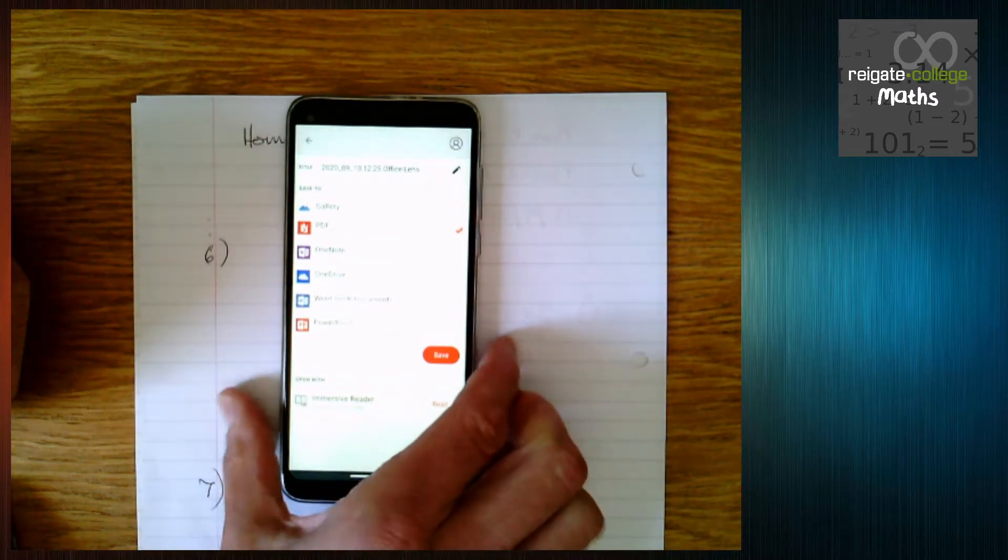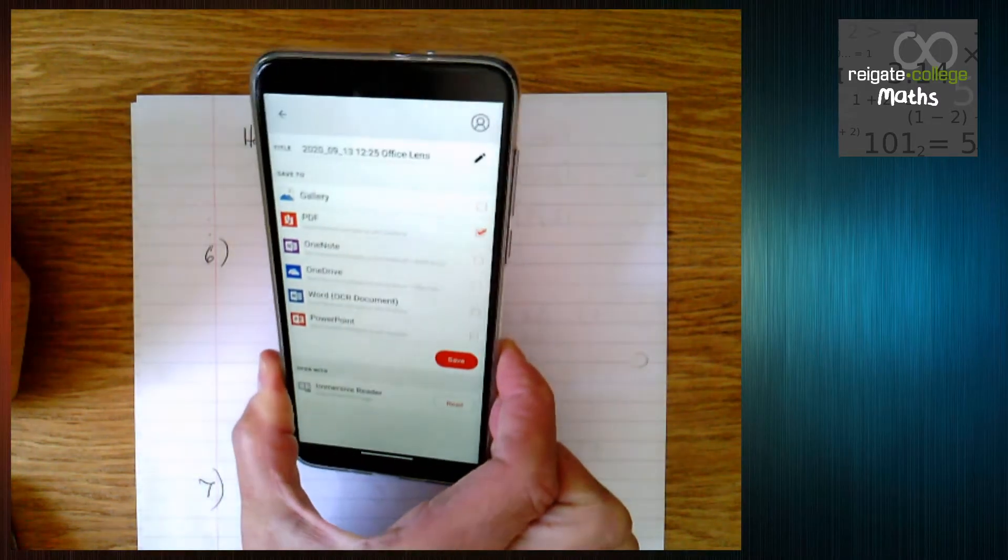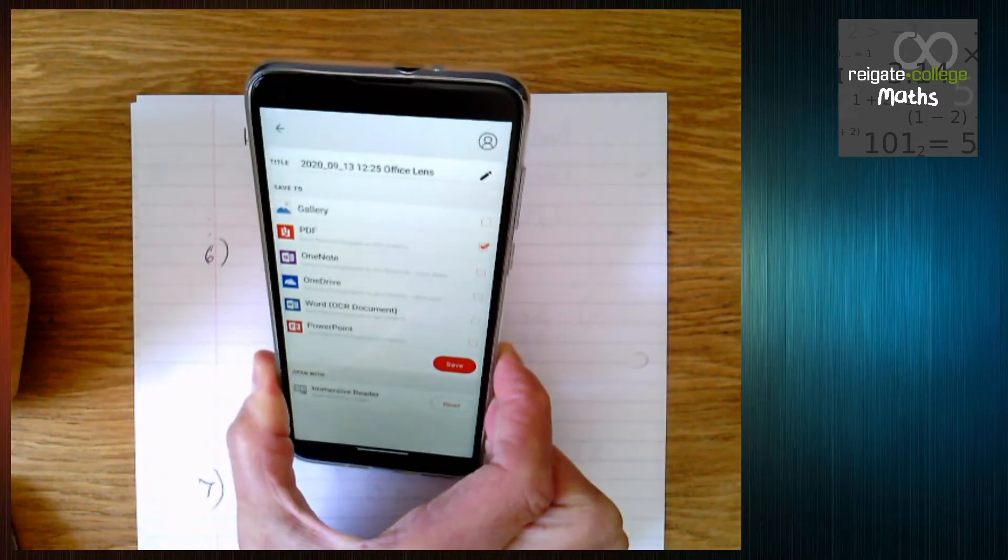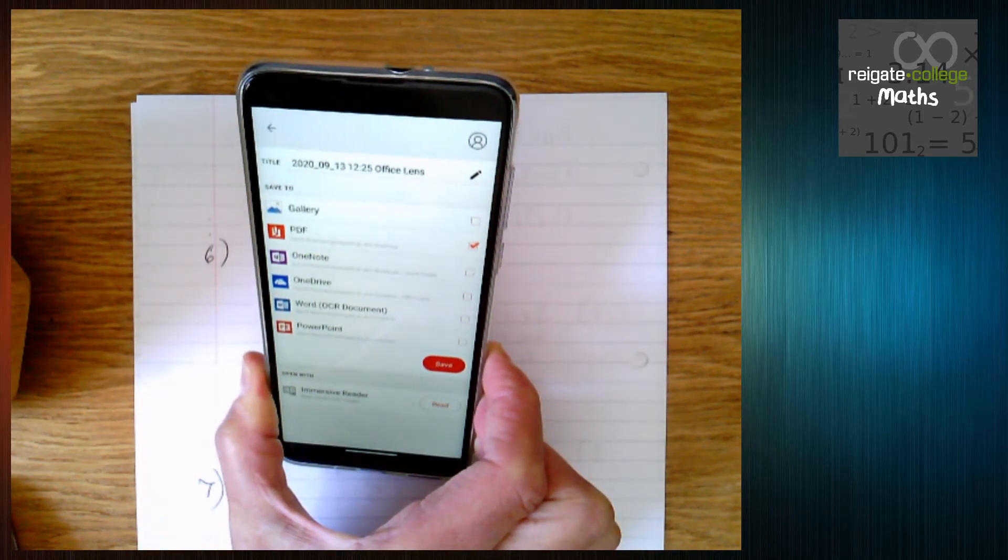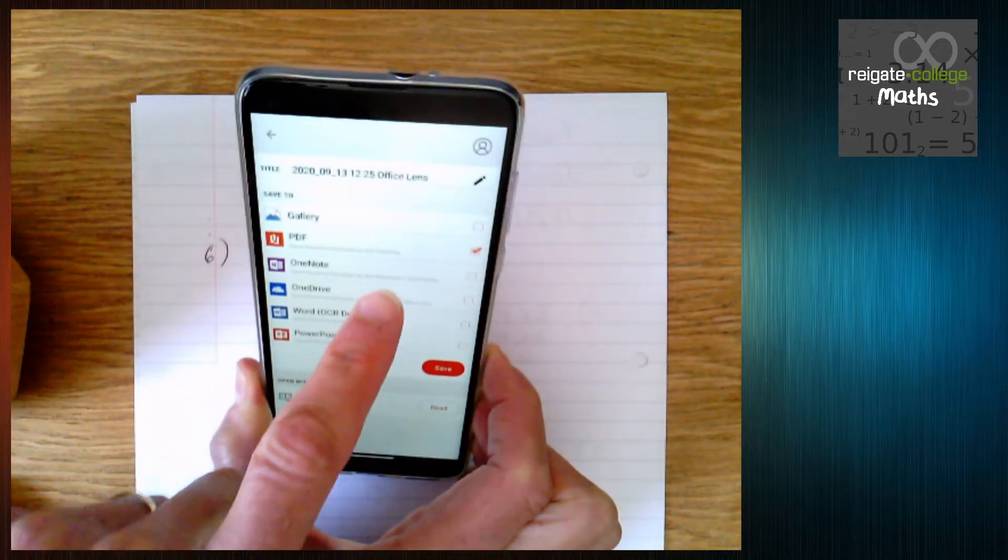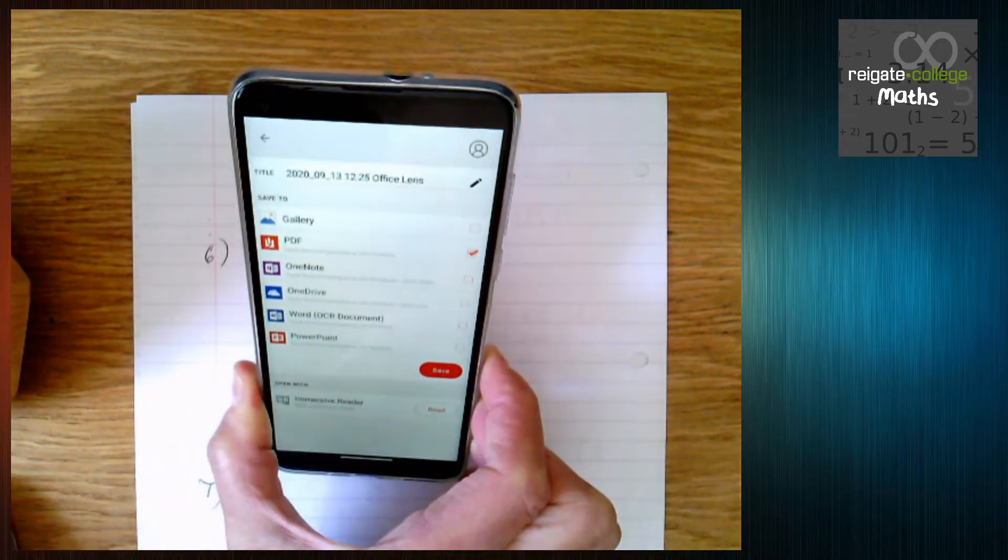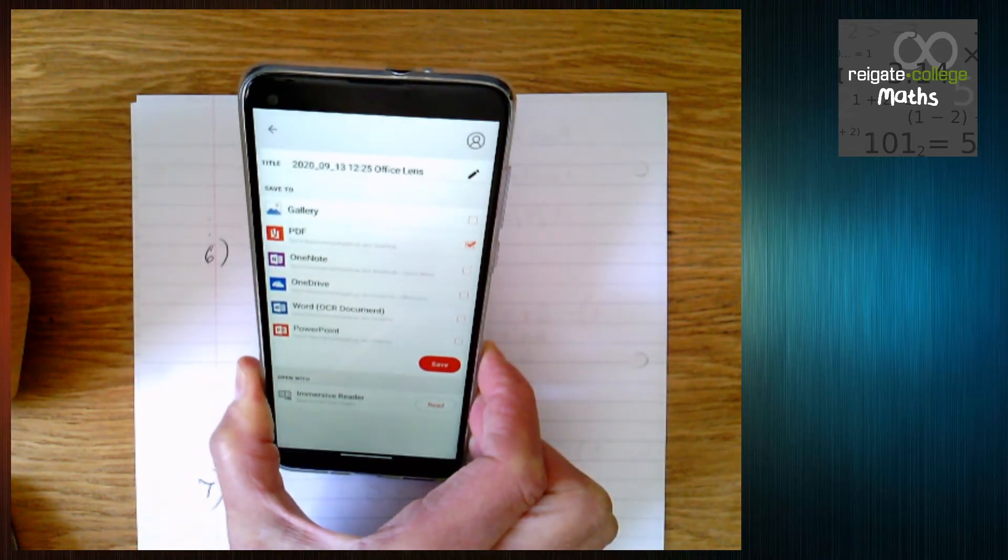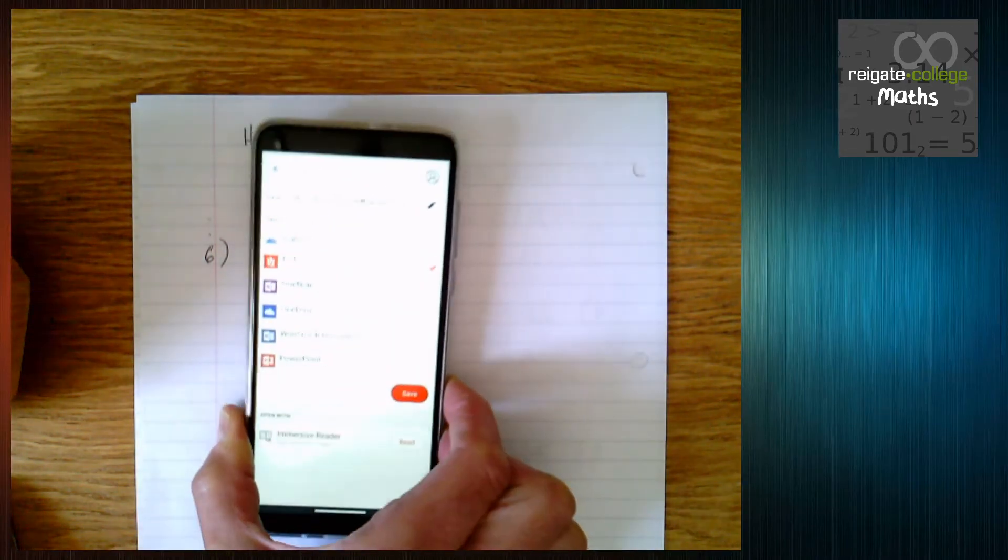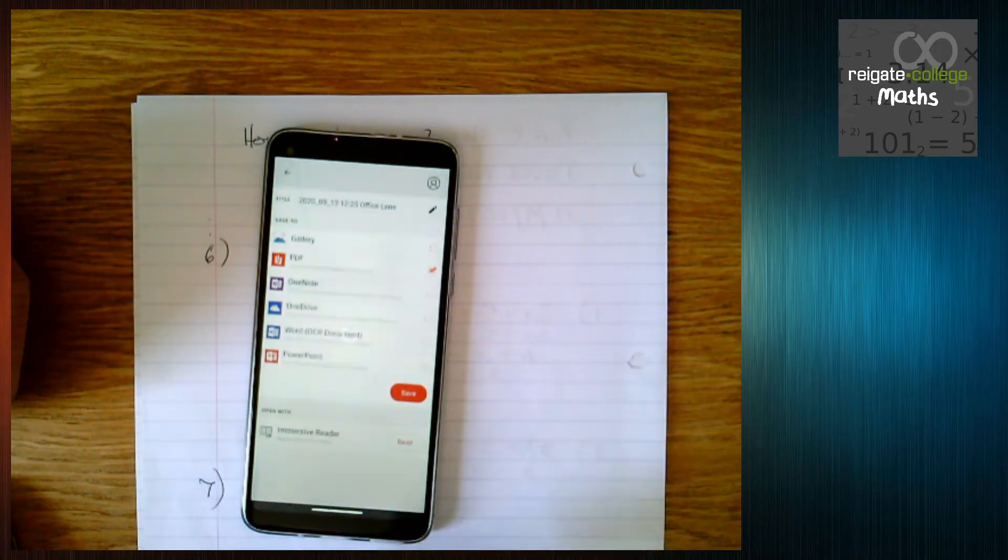And I get various options to save this. I've already ticked PDF, but there are various other things you can do. PDF, I've already logged in with my college account, so it's going to save it as a PDF to my OneDrive account. I'm just going to click save there.